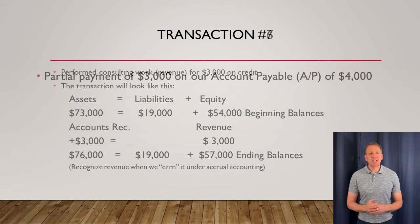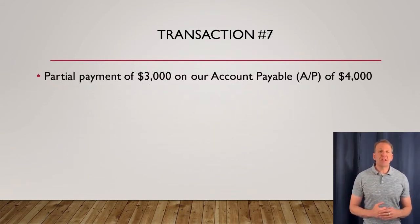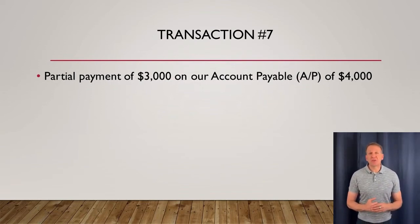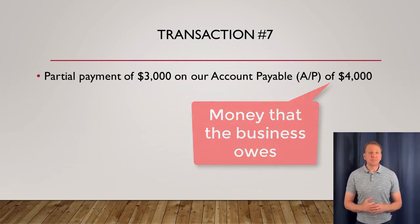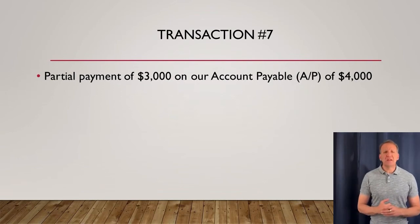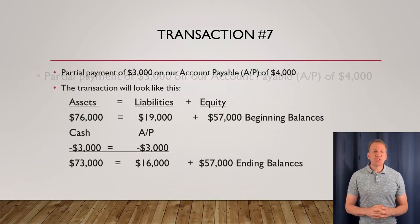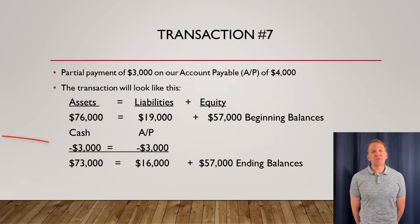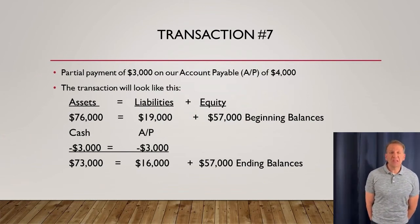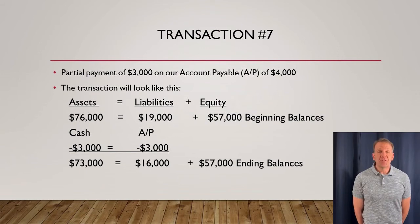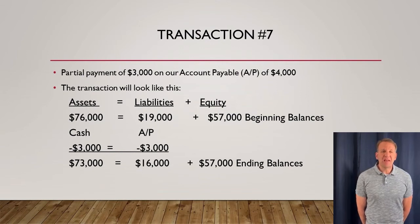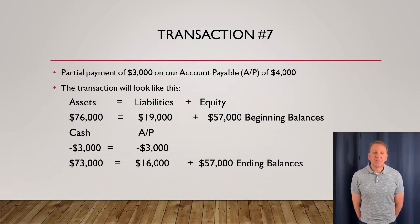In transaction number seven, we have a partial payment of $3,000 on our accounts payable. Our accounts payable balance was $4,000, meaning we owed somebody $4,000, and now we're paying $3,000 of it. Cash goes down because we're paying, so cash decreases $3,000. Our accounts payable liabilities also decrease by $3,000. The ending balances are $73,000 for assets, $16,000 for liabilities, and $57,000 for equity.